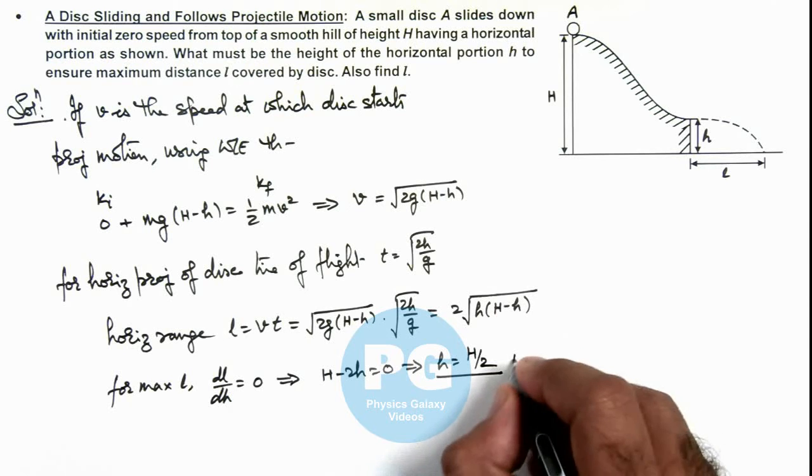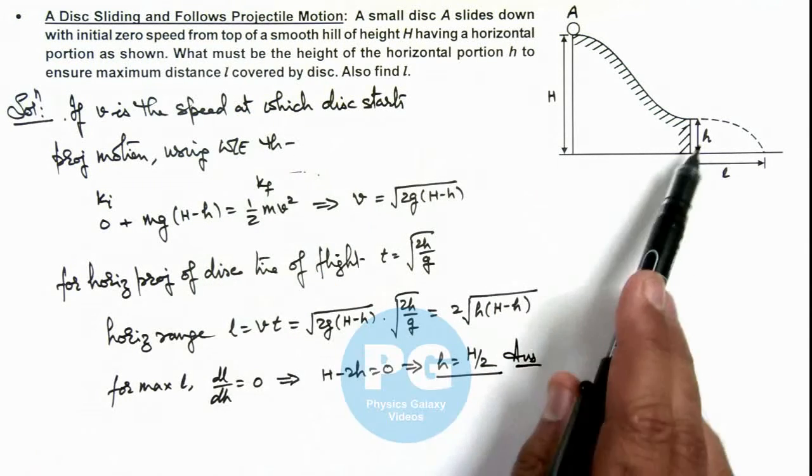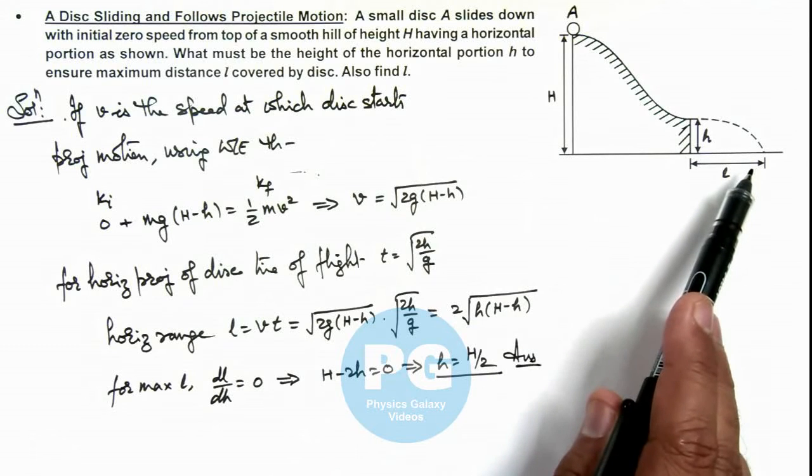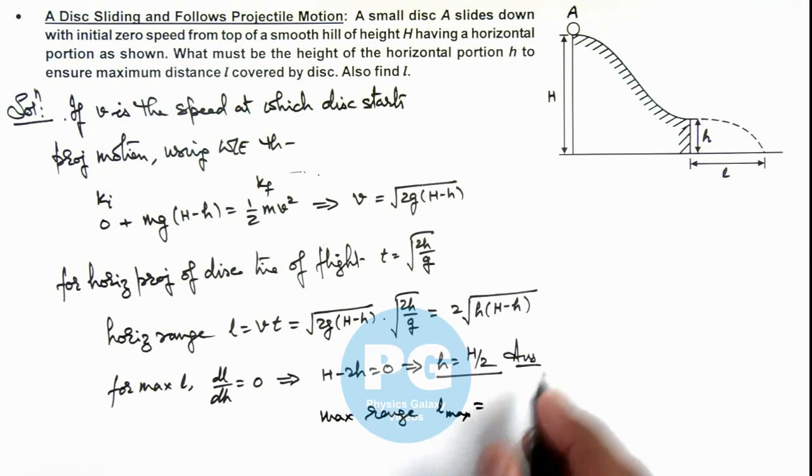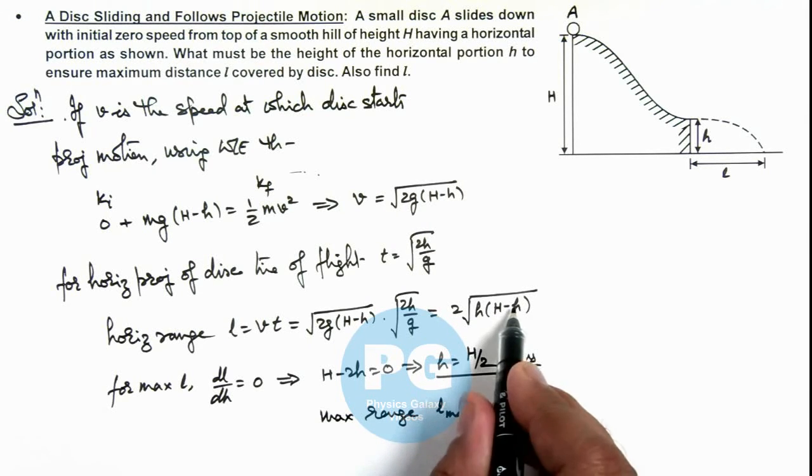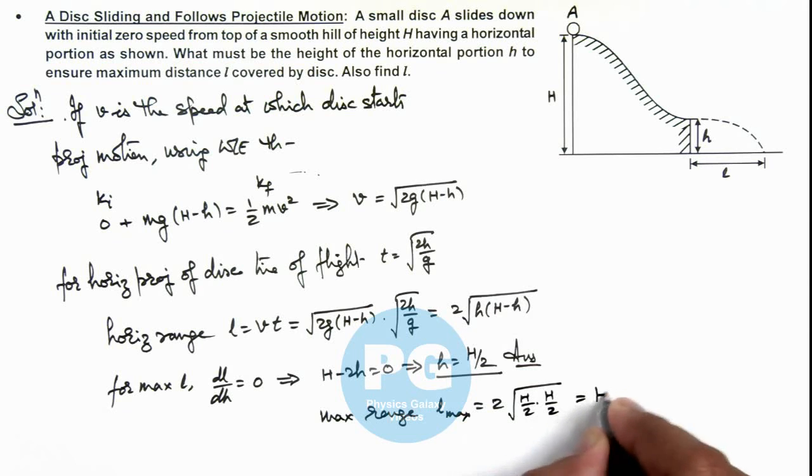So this is one answer which we are required to calculate, the value of h for which the value of L will be maximum. And maximum range can be given as L max. Here we substitute the value of h over here, so this will be twice of under the root H by 2 multiplied by H by 2, so this is equal to H. This is another result of the problem.